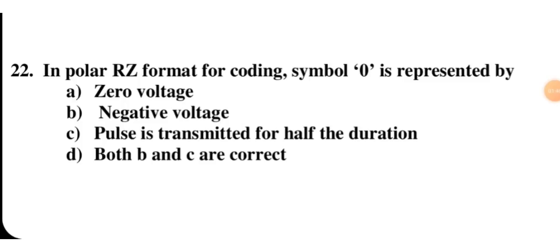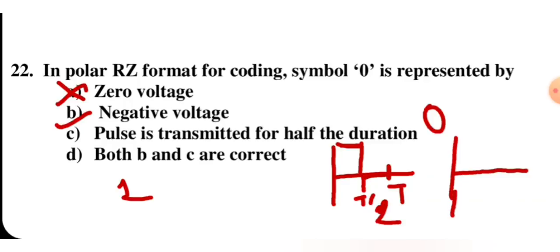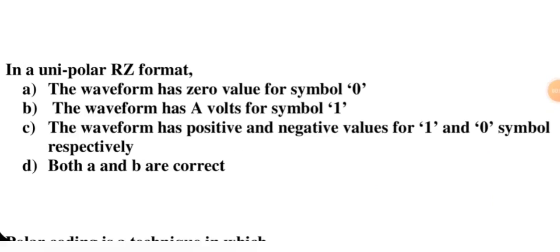In the polar RZ format for coding: symbol 0 represented by 0 voltage — this is wrong because polar means 0 is negative voltage, not zero. Negative voltage — correct. Pulse transmitted for half the duration — yes, RZ means return to zero, so we transmit for T/2 then return to zero. For symbol 0, the polarity changes for T/2 time. Both B and C are correct, so we mark D as the correct option.